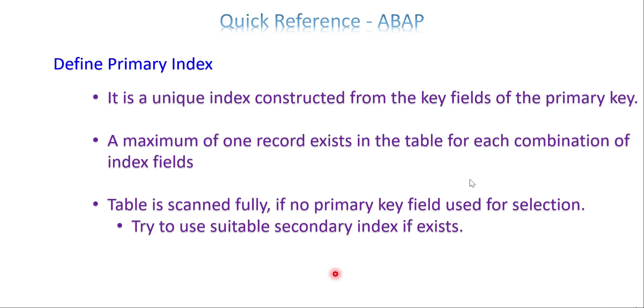If there is any secondary index available, it tries to go with the secondary index; otherwise it won't. That's why while writing a SELECT statement, always try to list out all the primary keys in your WHERE condition to increase the performance.